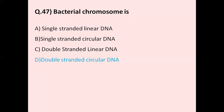Question number 47: The bacterial chromosome is — option A single-stranded linear DNA, option B single-stranded circular DNA, option C double-stranded linear DNA, option D double-stranded circular DNA. The correct answer is option D, double-stranded circular DNA.